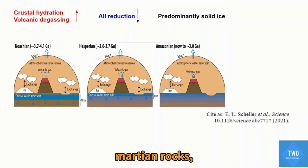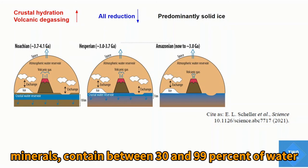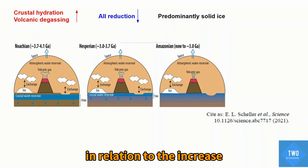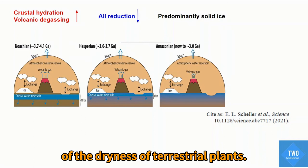Martian rock complexes of minerals contain between 30 and 99% of water in relation to the increase of dryness of the terrestrial planet Mars.